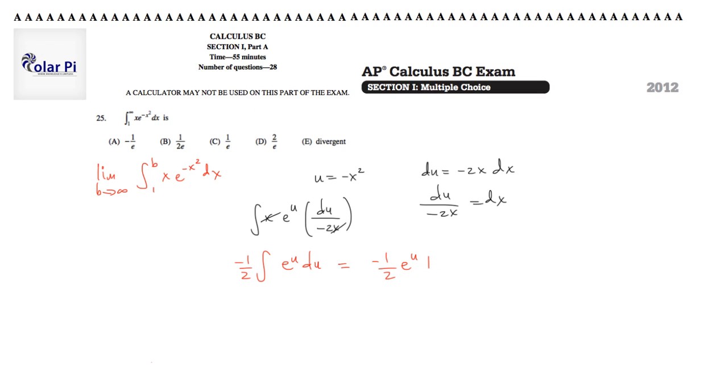Now, we're evaluating, so we don't need to worry about the plus c. Now that I've gotten this far, I was careful not to write my limits, because if I had written 1 to b here without changing my limits, then that would not be correct, because I've changed my variable into u. That's why I haven't written it up to this point, but now that I'm ready to evaluate, I'm going to bring back my limits, and I'm going to recall that u is negative x squared.